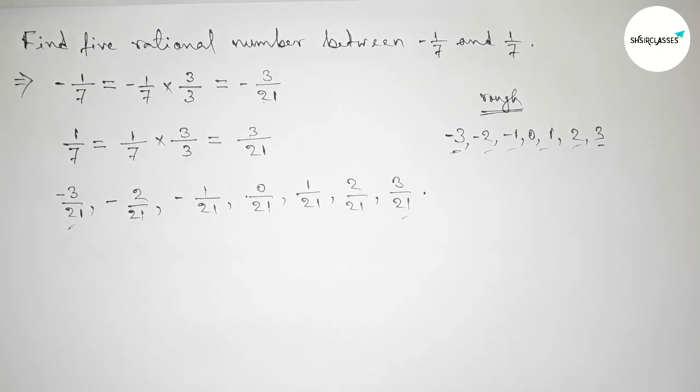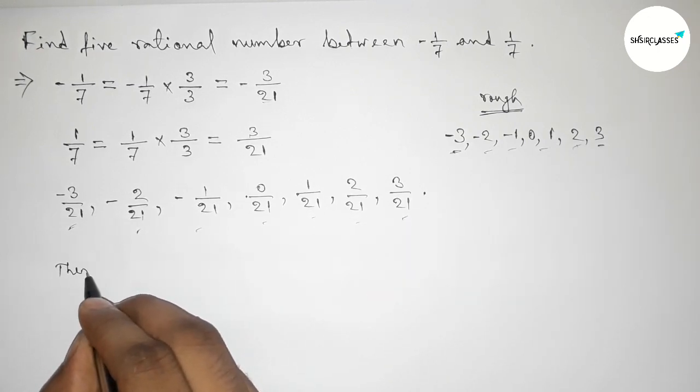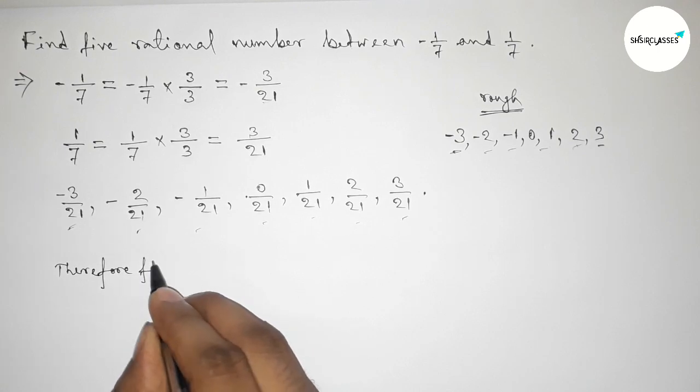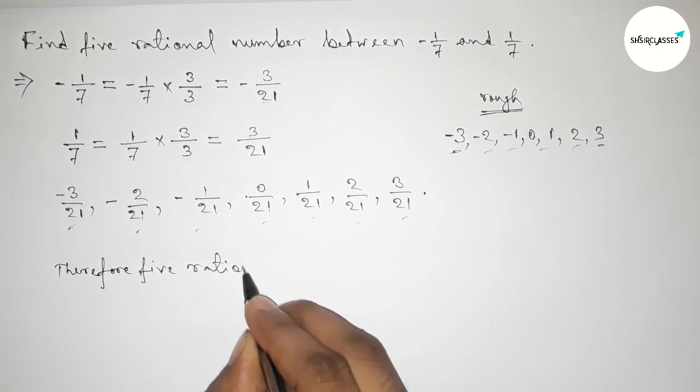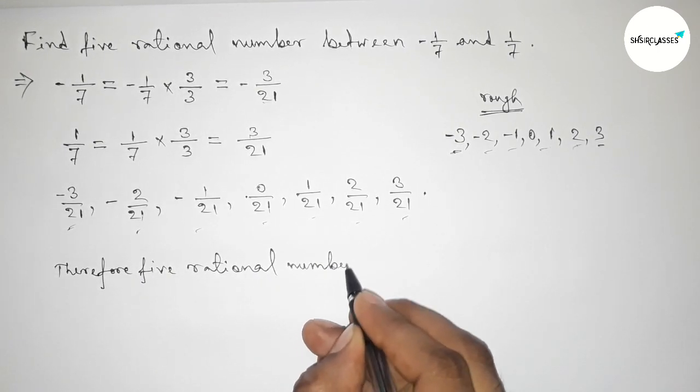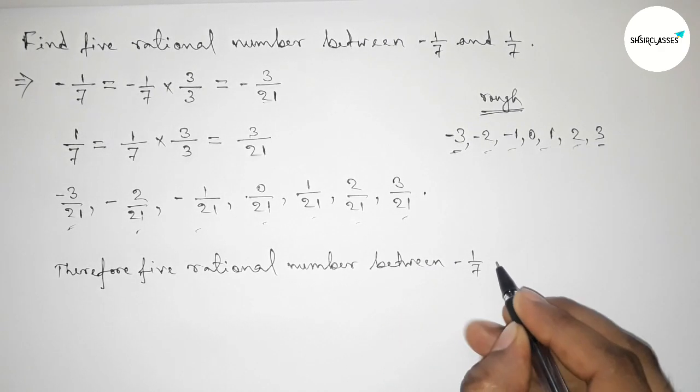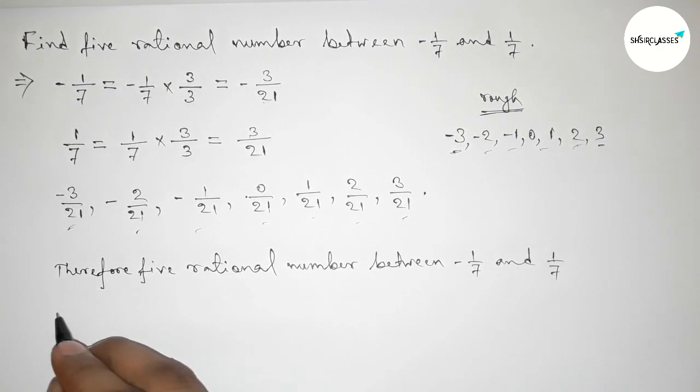So here between this and this, these are 5 required rational numbers. Therefore the required 5 rational numbers between -1/7 and 1/7 are: -2/21, -1/21, 0/21, 1/21, and 2/21. This is the correct answer.